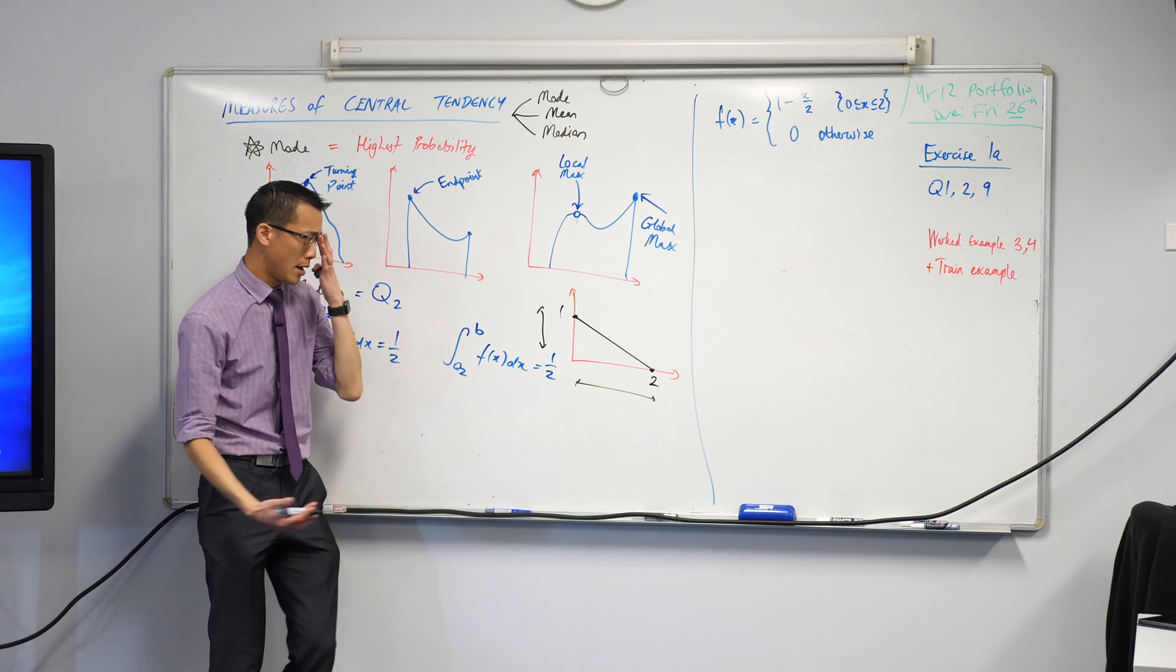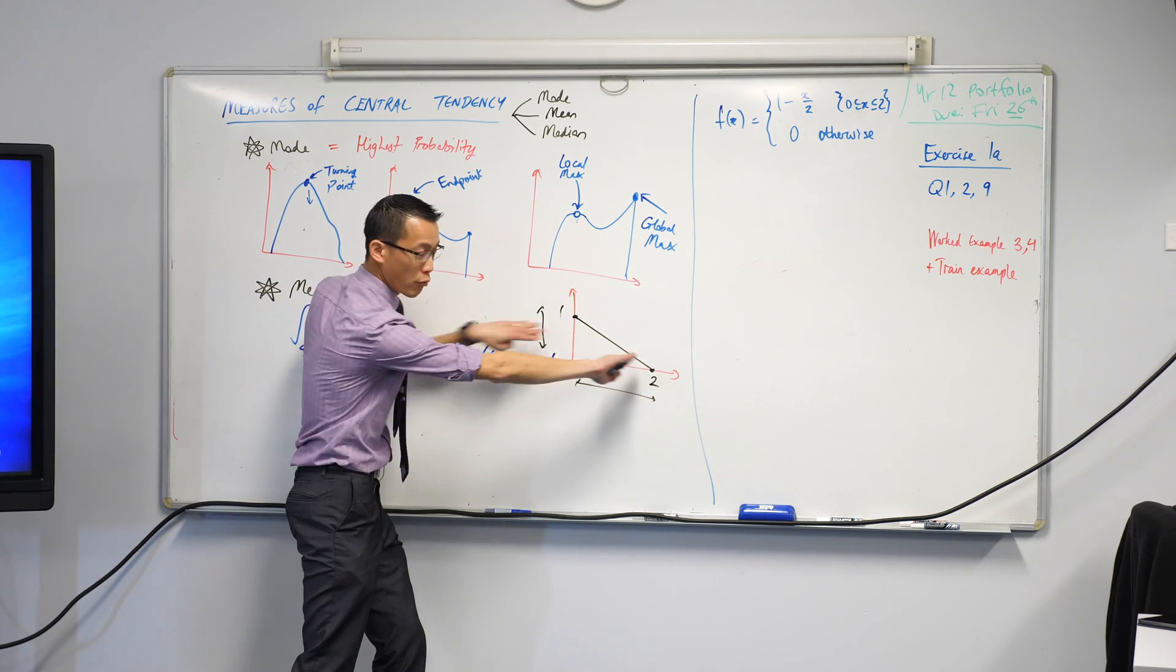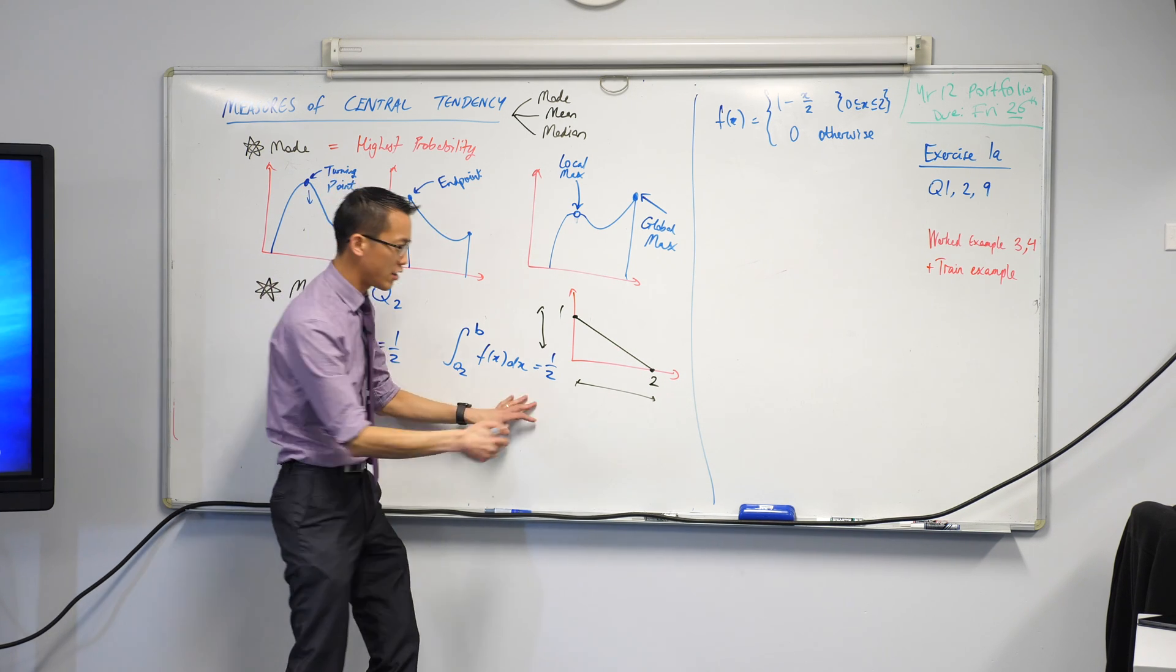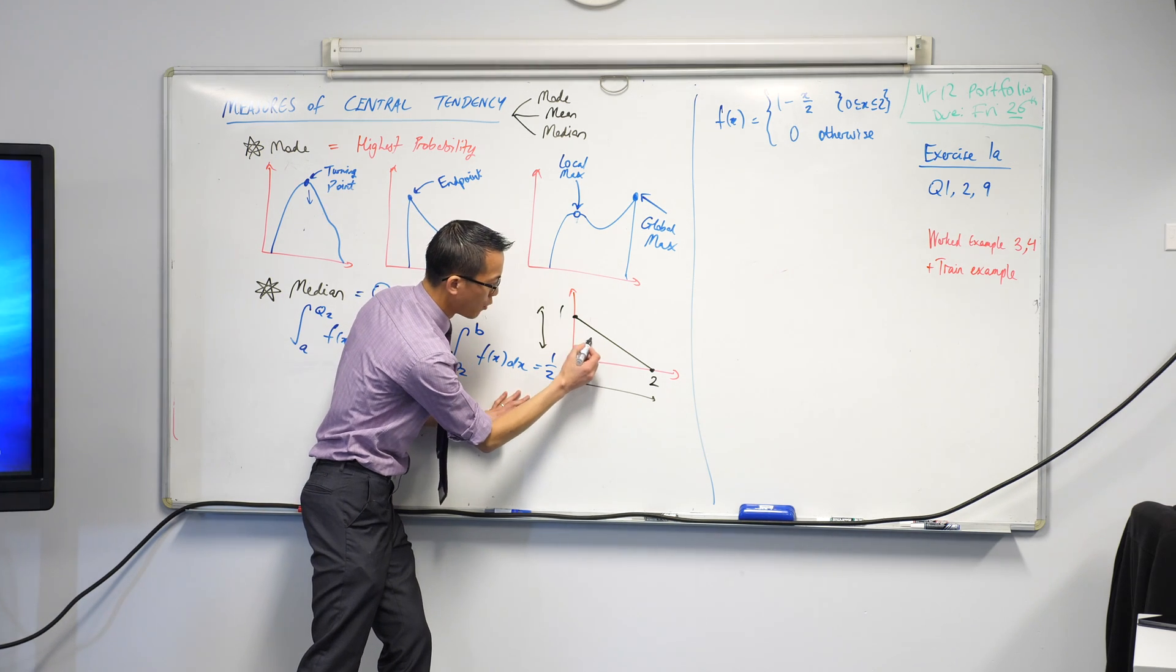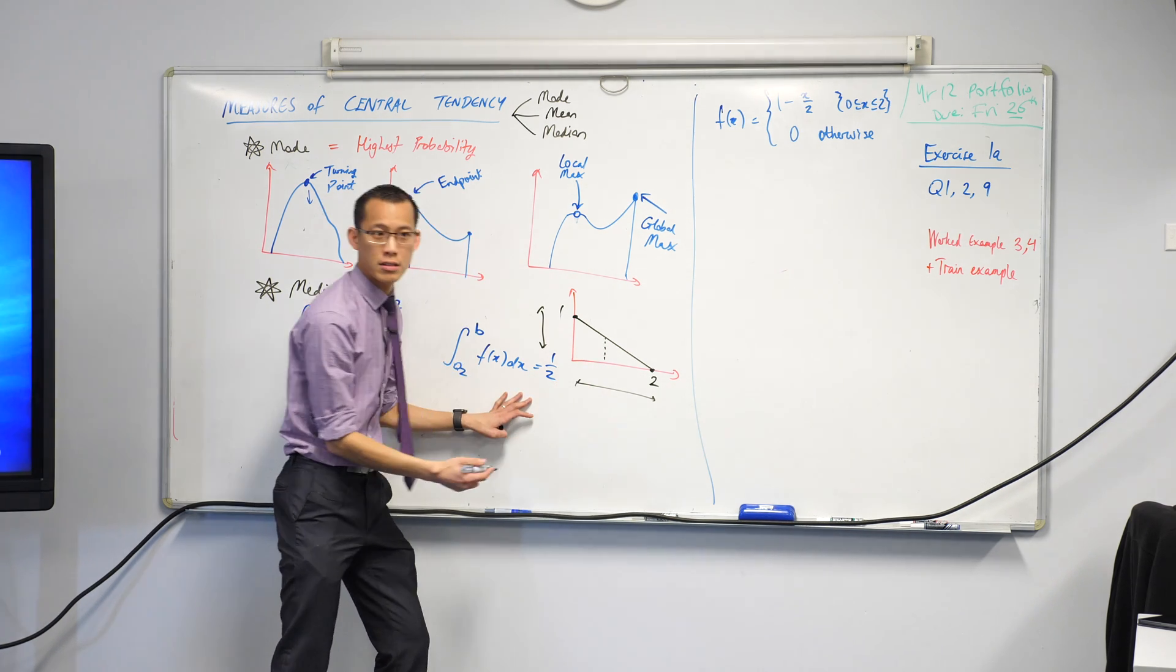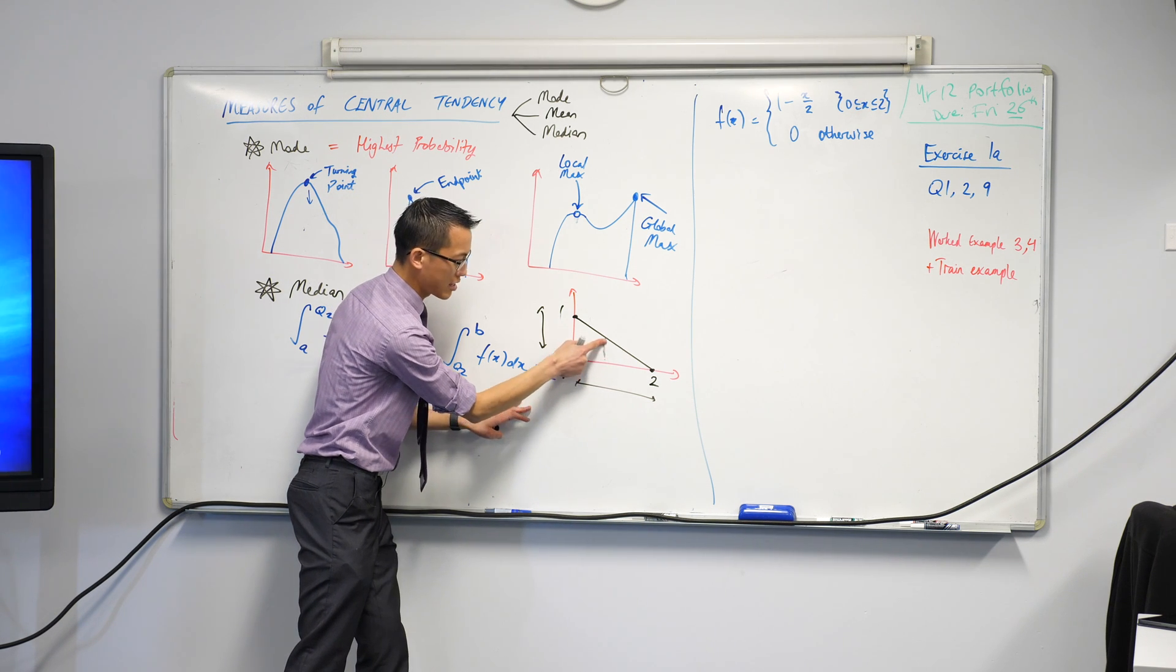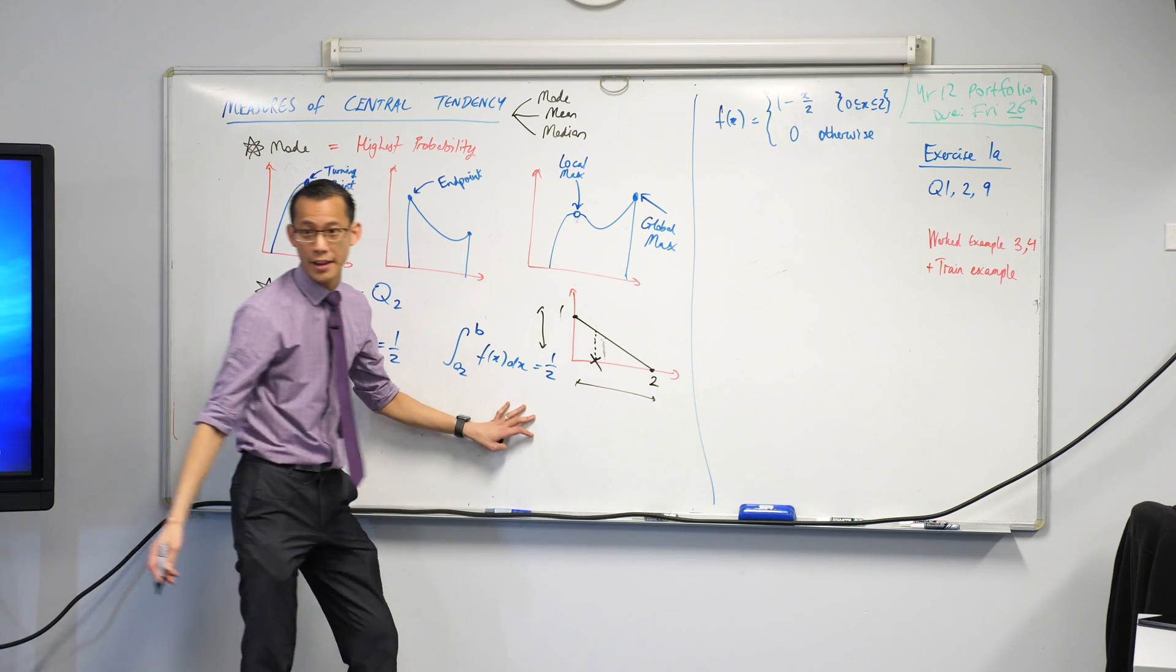It had better equal to 1, because what is this thing supposed to represent? It's a probability density function. So, what I'm trying to find is, there's some value in here, Q2, that will break this. This triangle has a total area of 1. I'm trying to find the value that breaks it into 50-50. I'm just going to kind of eyeball it. It can't be at halfway because then this triangle will clearly be smaller than this. So, I think it has to be a little bit this way.